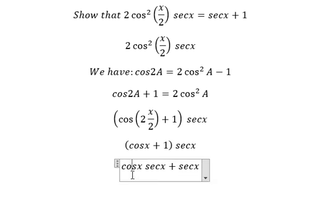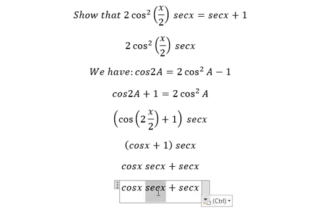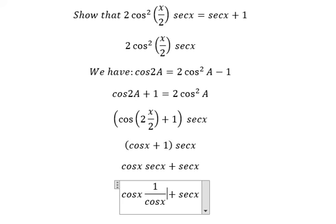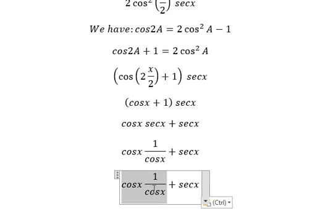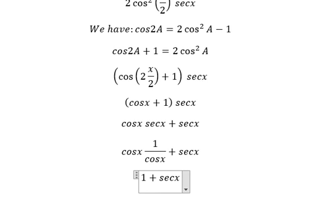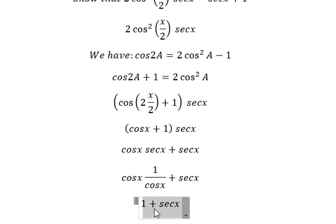Next, secant of S is about 1 over cosine S. We simplify this one and we got 1. And this is the final answer.